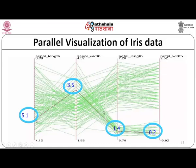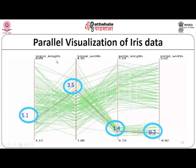Applying this technique for all values of sepal length, sepal width, petal length, and petal width produces the full parallel coordinates visualization of the iris data. The encircled values are the examples discussed previously. Using the polylines, we can understand how one variable may be interconnected with another, and we can determine the range of relation between two or more variables.